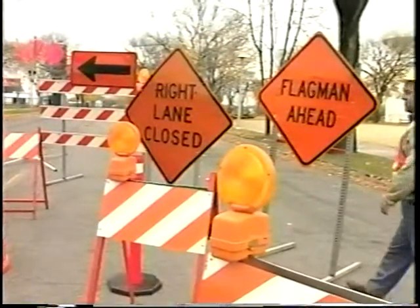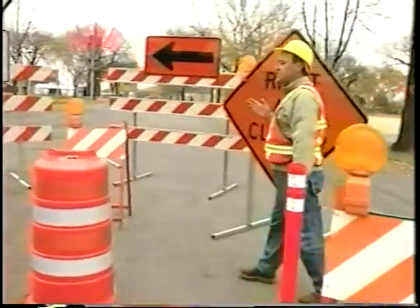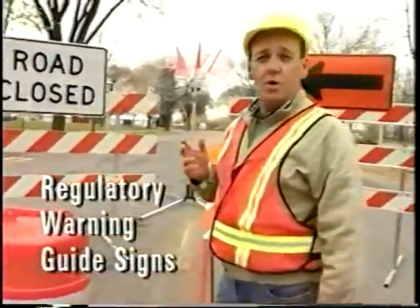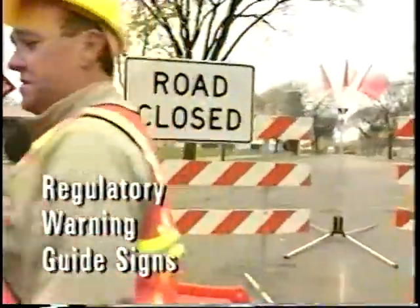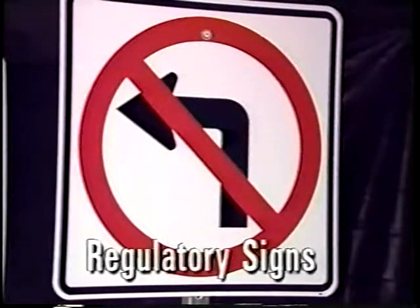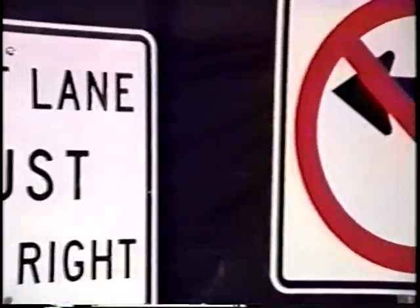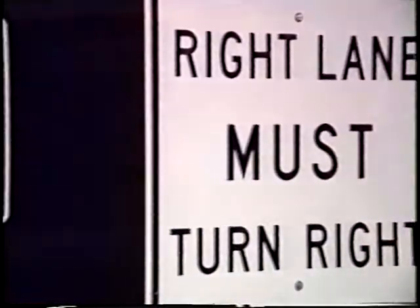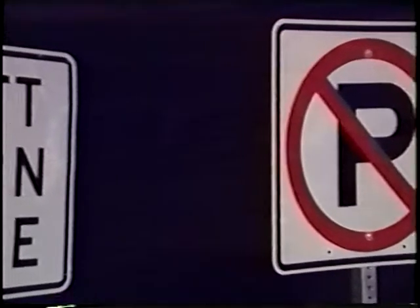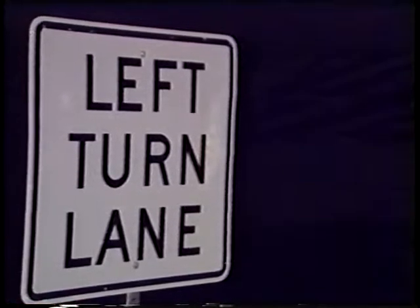Think about all the signs you see every day just driving down the street. Each of these signs belongs to one of three different categories: regulatory, warning, or guide signs. Regulatory signs, which are rectangular with a white background, hold legal obligations on traffic and are always placed where the regulation becomes effective. For example, parking restrictions begin at the point where the sign is located.